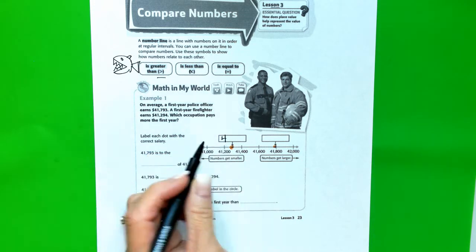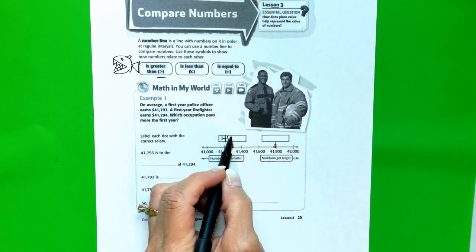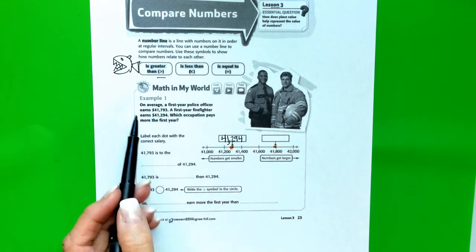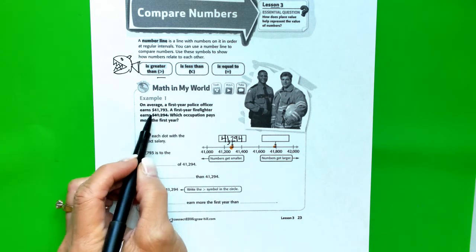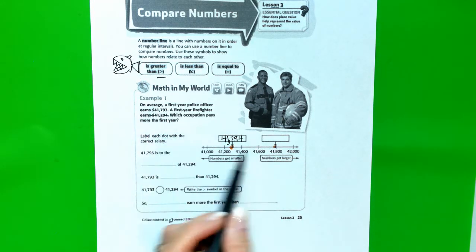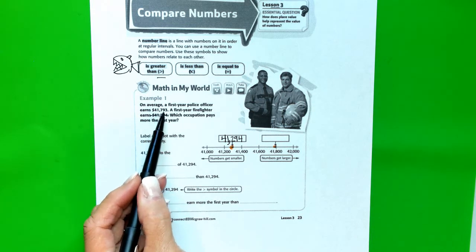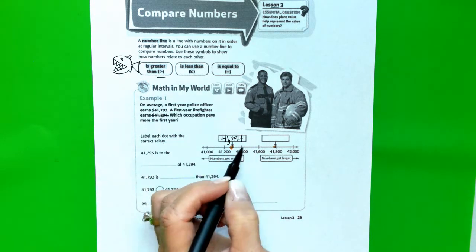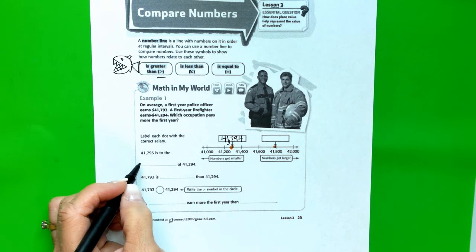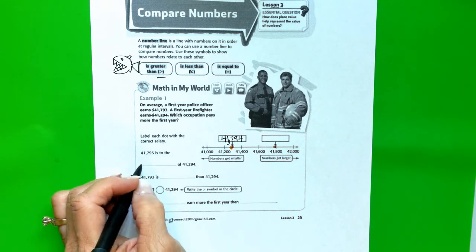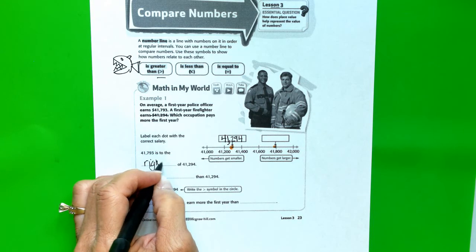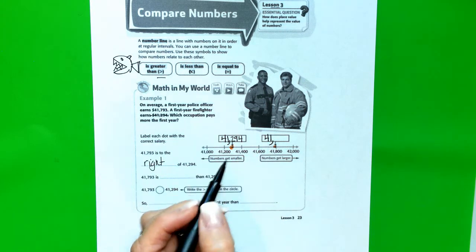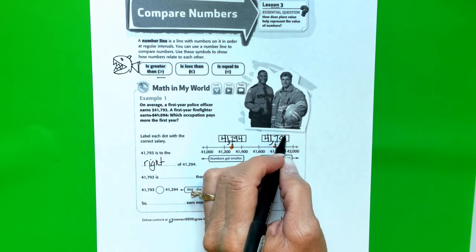And let's plug in $41,294. Now, so we've plugged in that one. Now we need to fit in $41,793. So, $41,793 is to the right of $41,294.